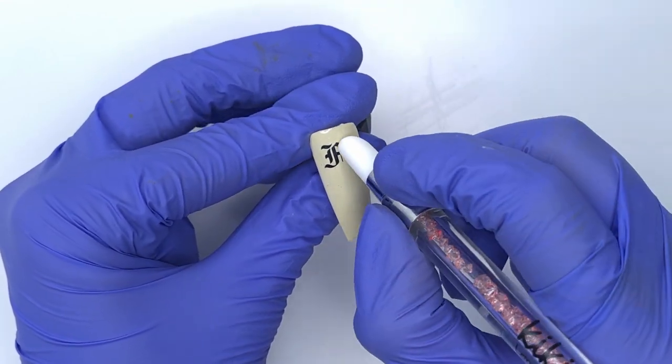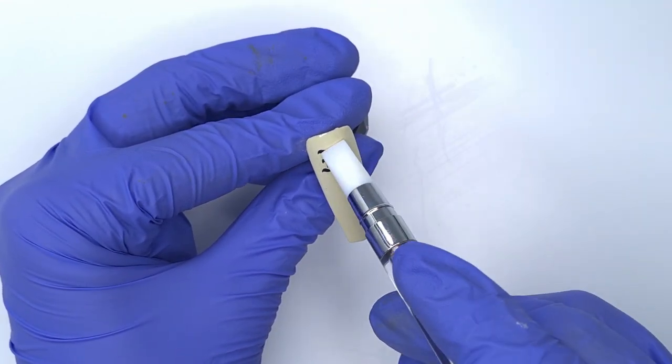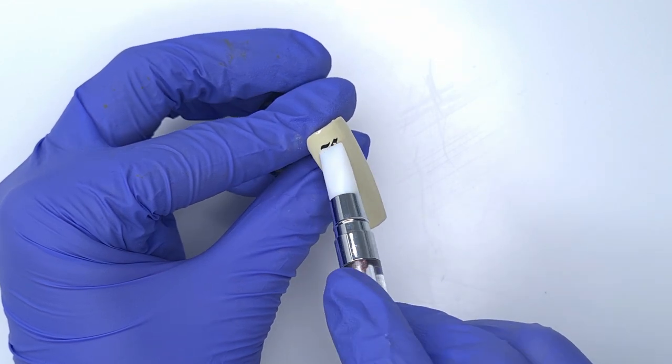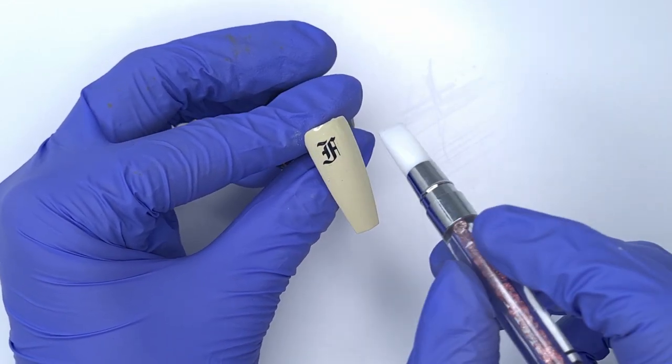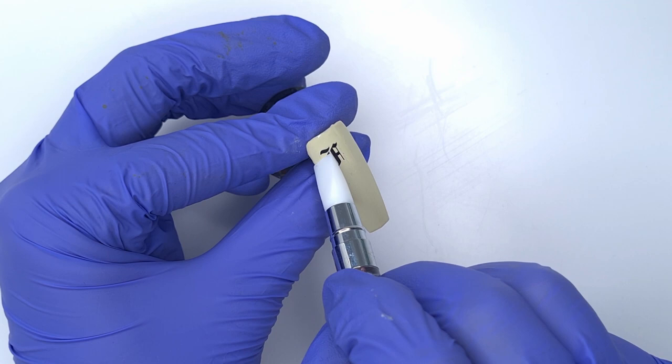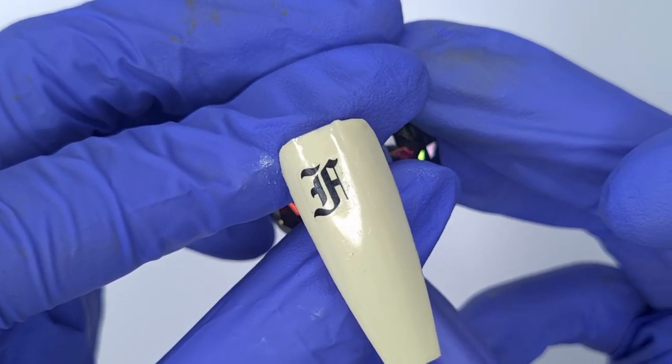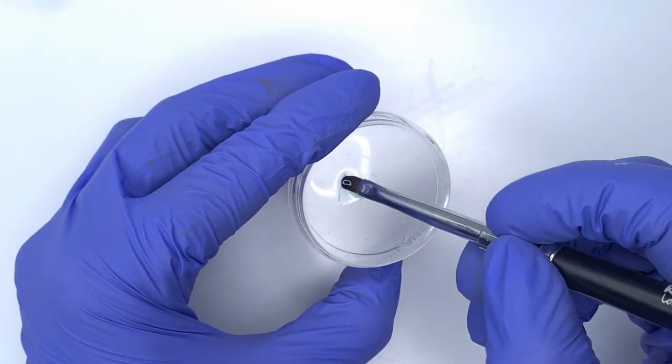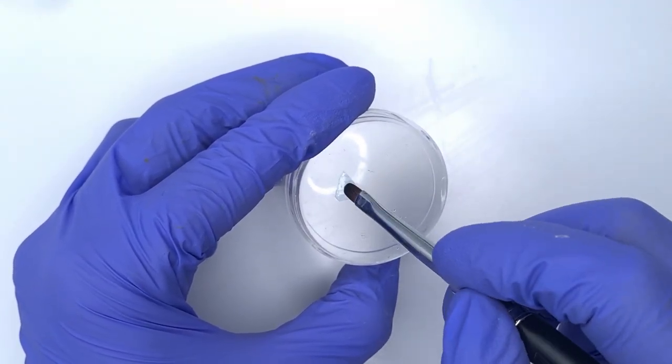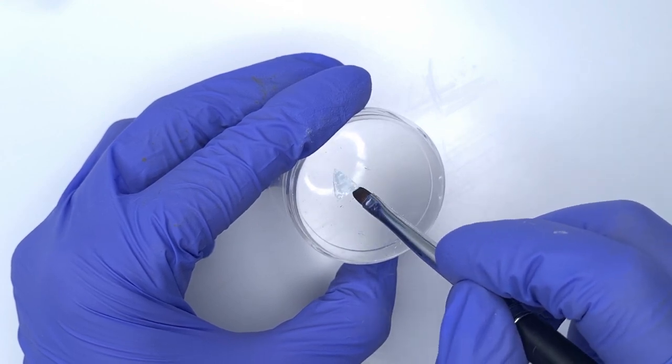I do find that applying the water decals with the stamper you do get very minimal creases and bubbles so it's definitely an easier way to apply the water decals. And you can see here how well that has adhered down to the nail there's no creases or bubbles or anything like that. So I'm going to fly through and repeat that step on all four of the nails.